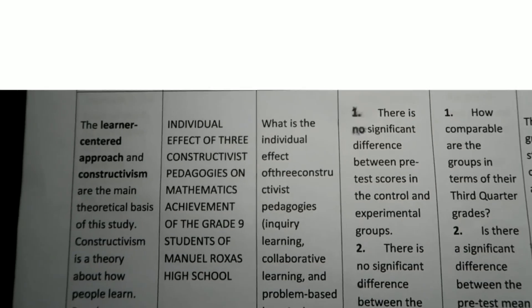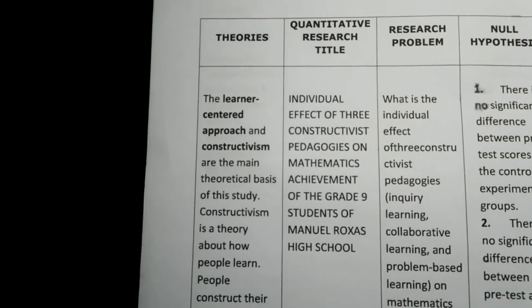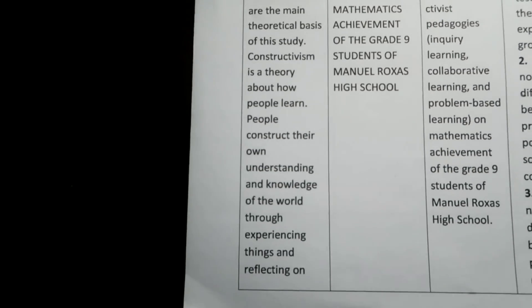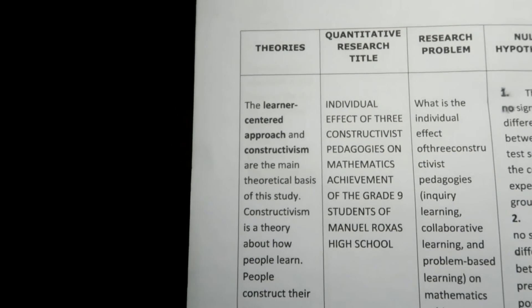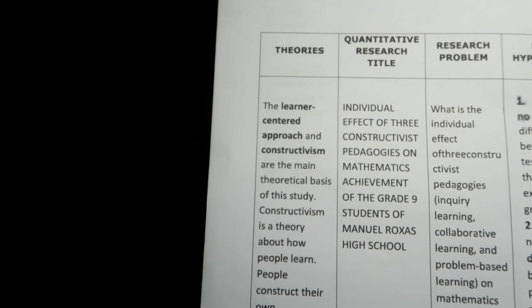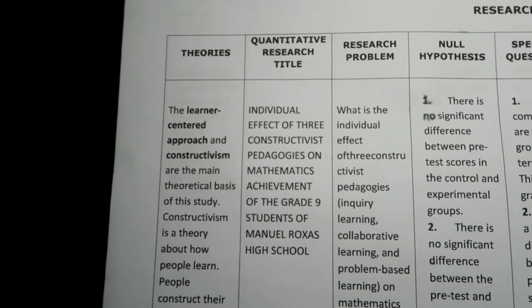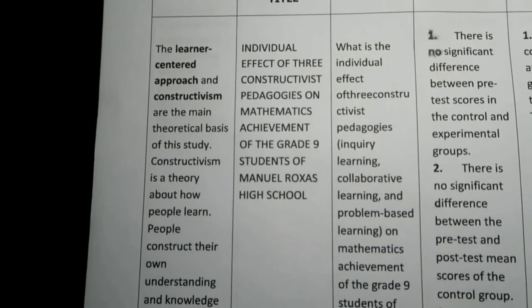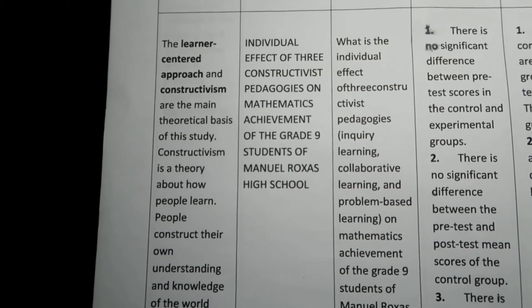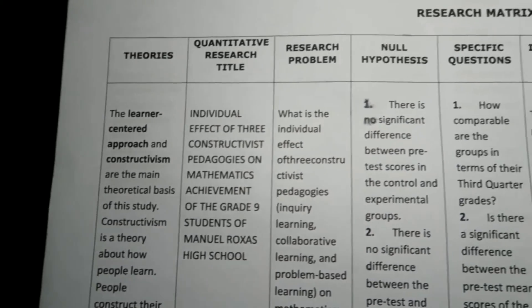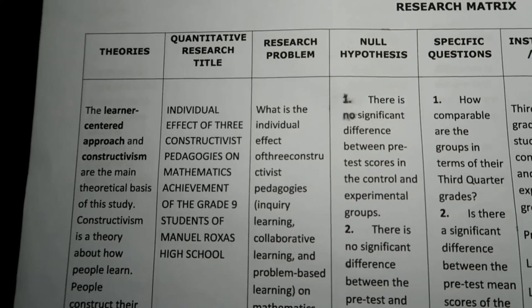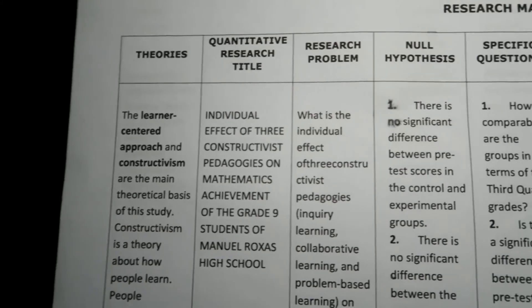After discussing the template, we have a sample filled-up research matrix. The first column is theories — the theory stated here is constructivism. Make sure you have clearly stated the main theory of your research, which is relevant to your research title. On the second column is the research title: 'The Effects of Three Constructivist Pedagogies on Mathematics.' The research problem, as discussed, is simply the question form of the research title.